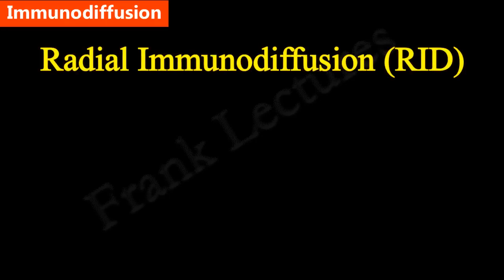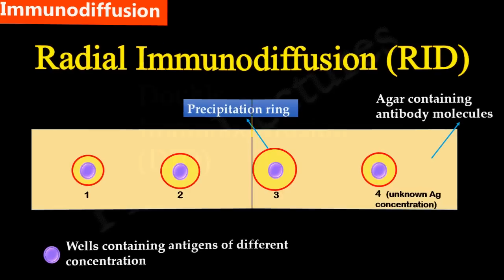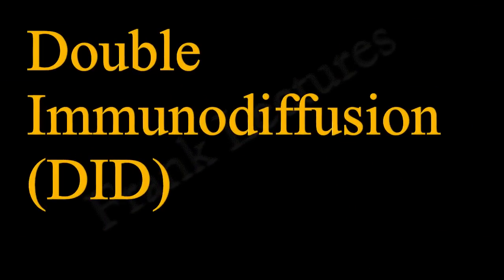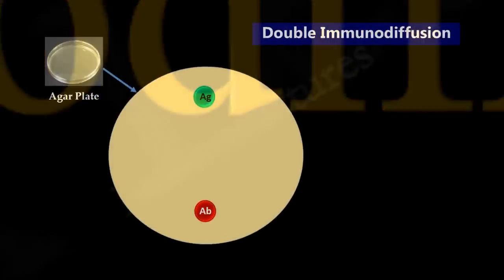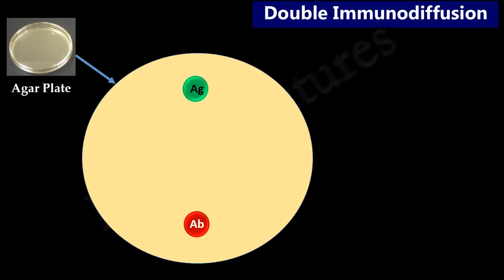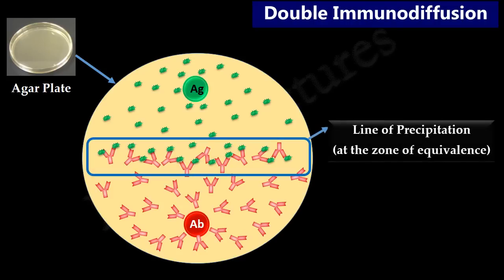In the previous video lecture, we covered radial immunodiffusion, in which antibodies are immobilized by incorporating them in the agar medium and antigens are free to move. Today we will study double immunodiffusion. Double immunodiffusion is abbreviated as DID. This technique is also known as the Ouchterlony technique, or Ouchterlony double diffusion. In this immunodiffusion, both antigen and antibody diffuse radially from wells towards each other, and at the zone of equivalence a visible line of precipitation is formed.